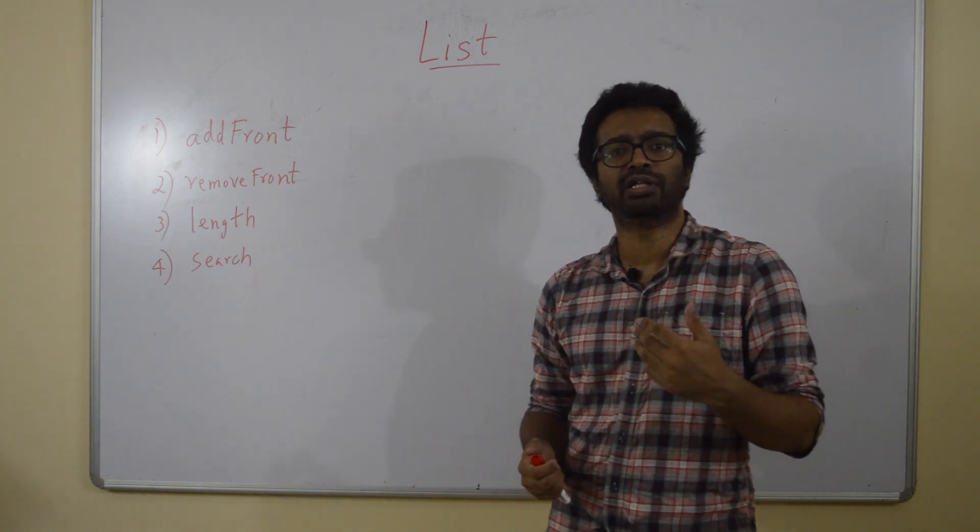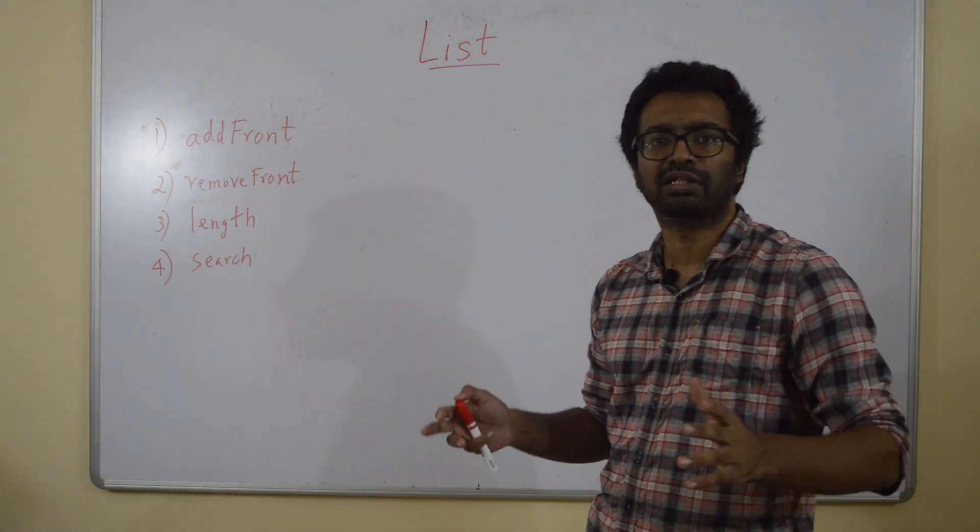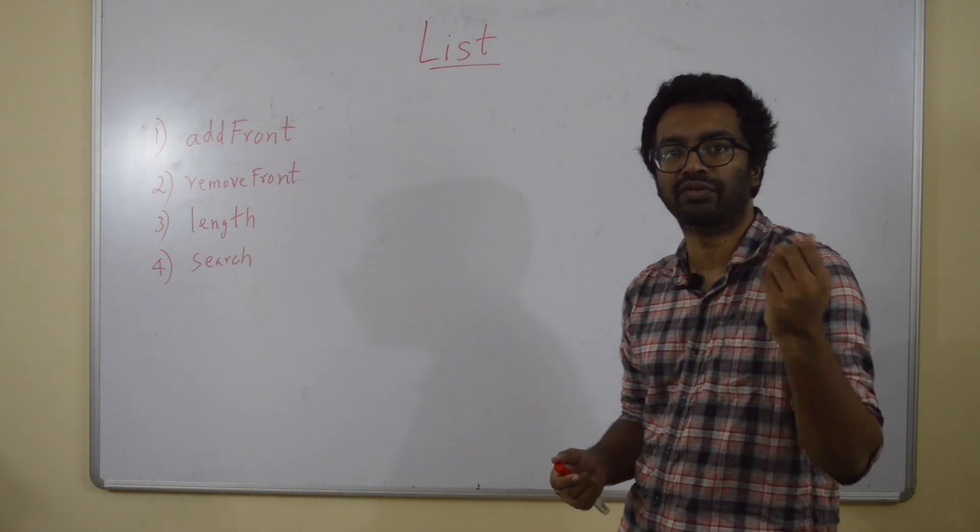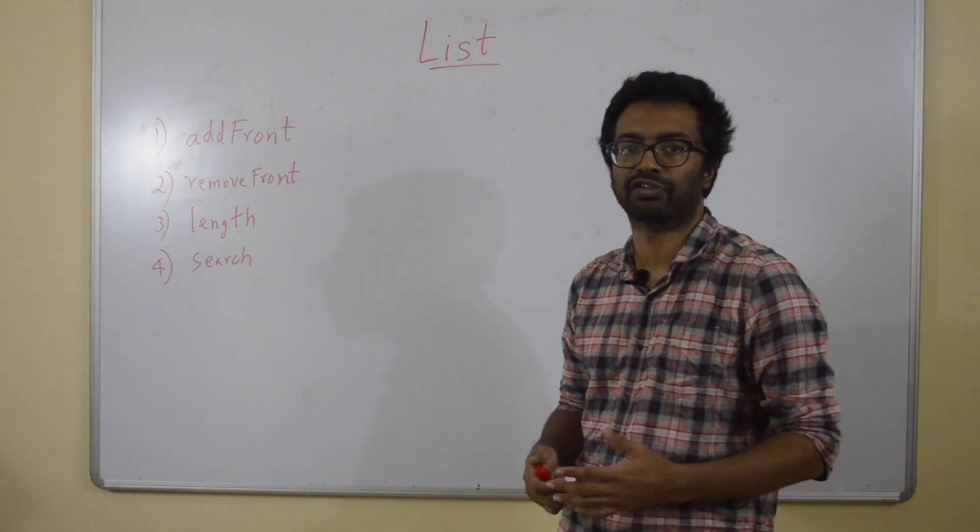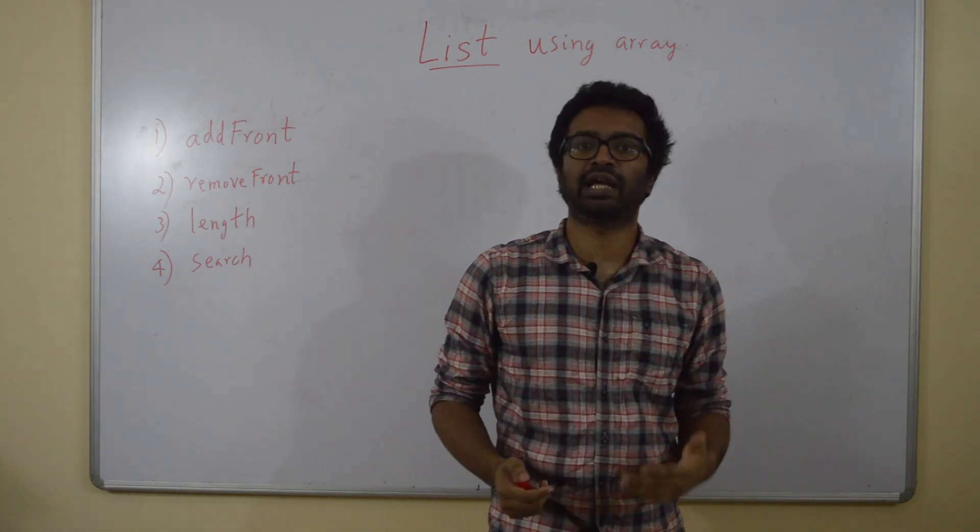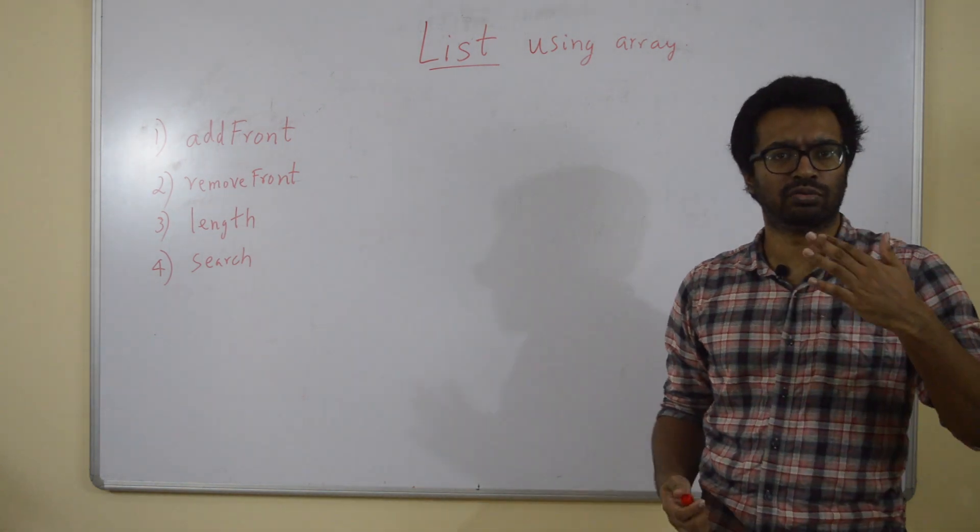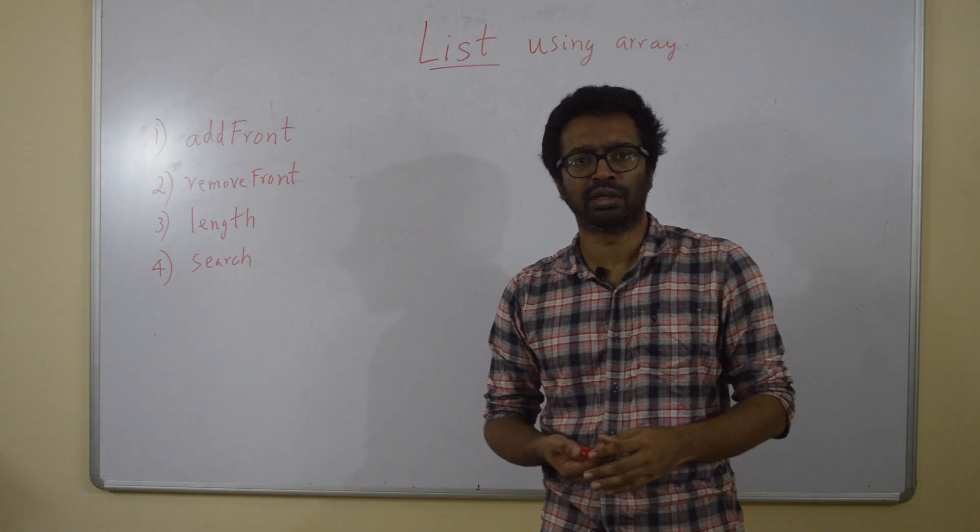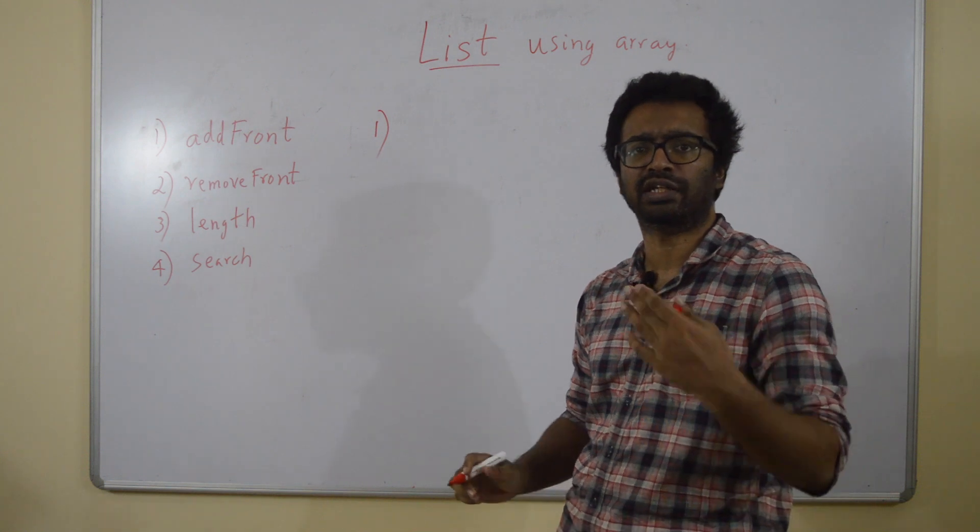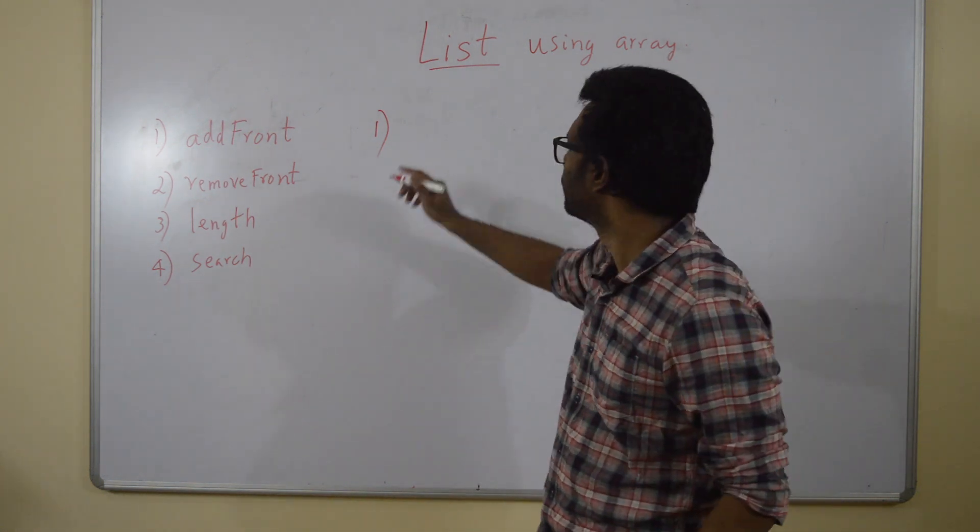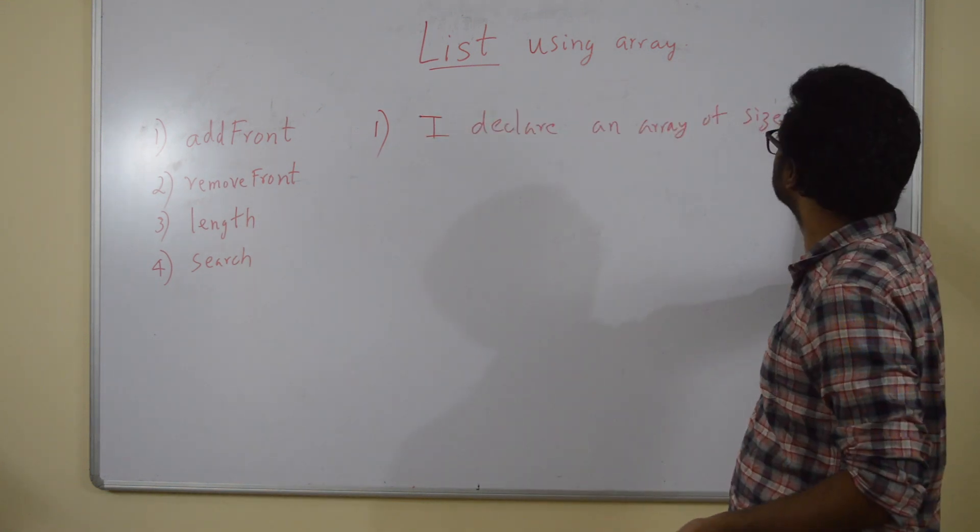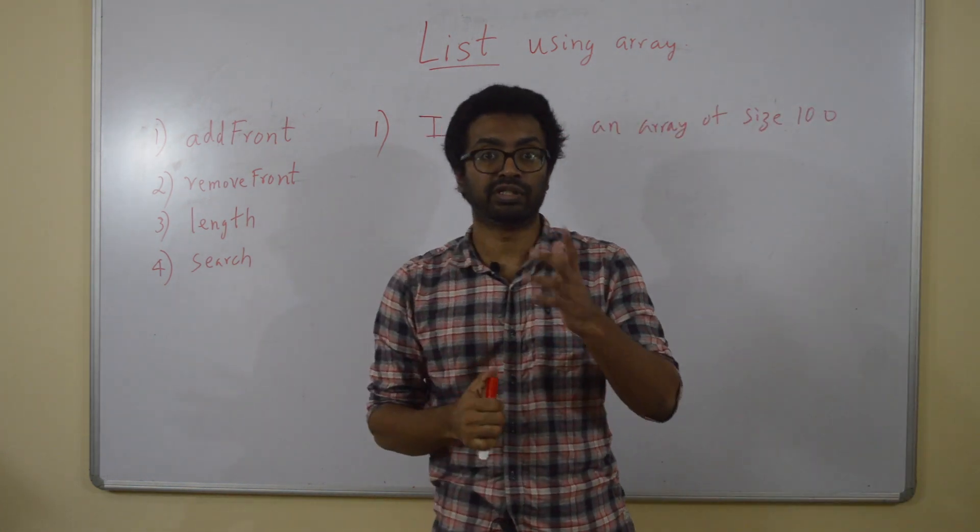Now, how are we going to implement the list data structure? Let's try to implement this list using an array and see what is an issue with it. If I want to create a list data structure using an array, I have to first declare an array. And how big should the array be? That's the first question I have to address. Let me say I am going to allocate an array of size 100. What is the issue now?